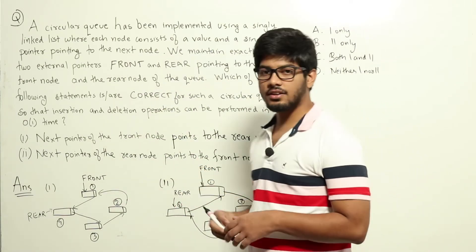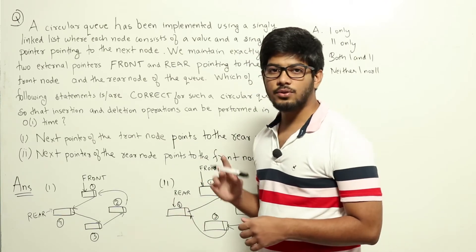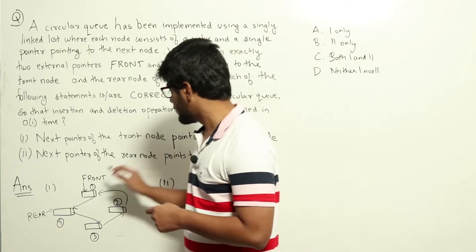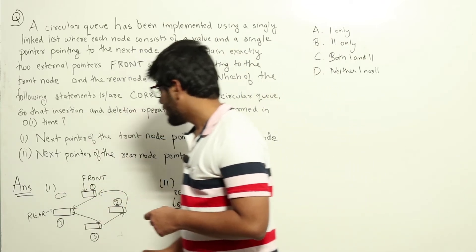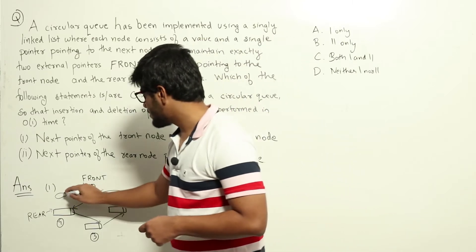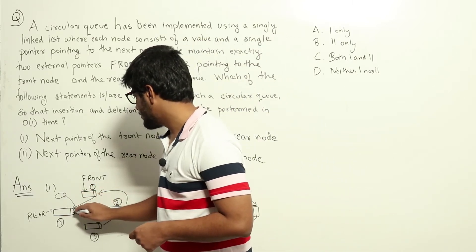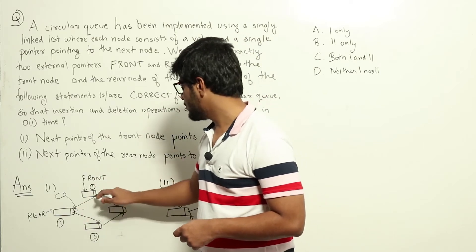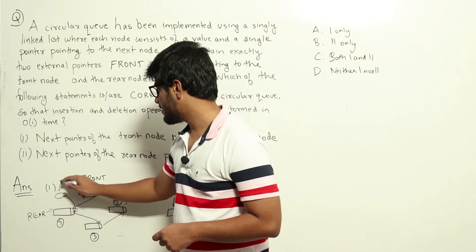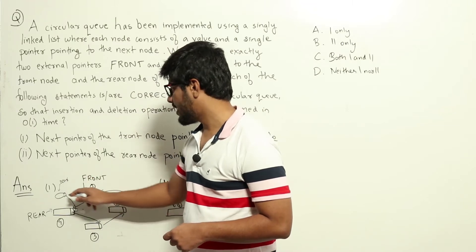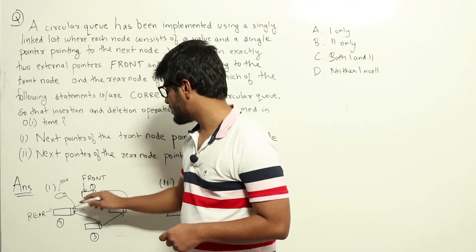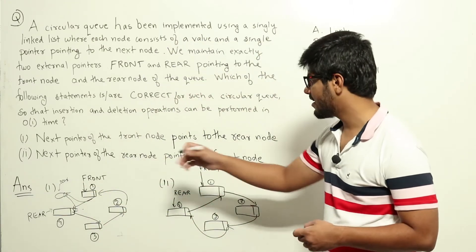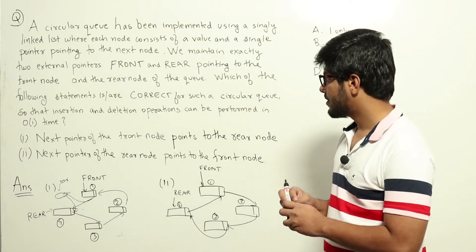Now let us try inserting or deleting. In a circular queue, insertions happen at the rear node and deletions happen from the front node. For insertion, we create a new node. We already know the rear node's address, so we can point the new node's next straight to the rear's current next, then update the front node to point to the new rear node. Clearly insertion is done in O(1) time.